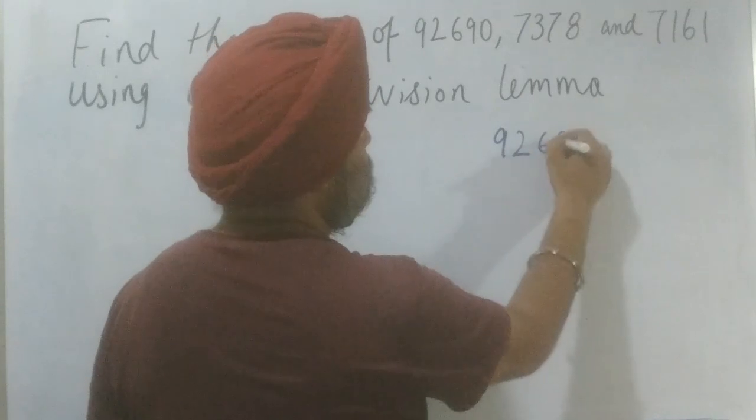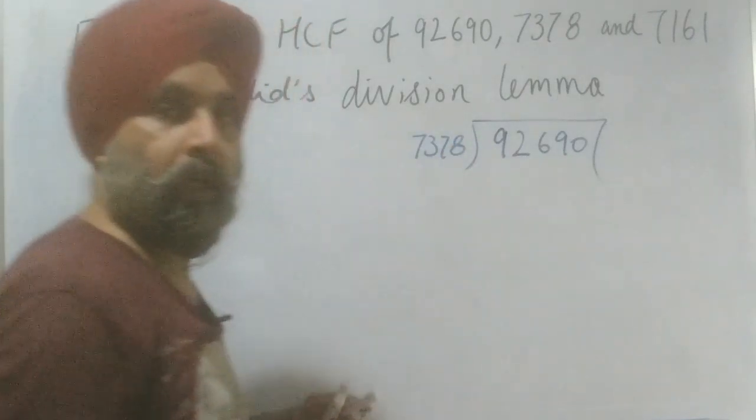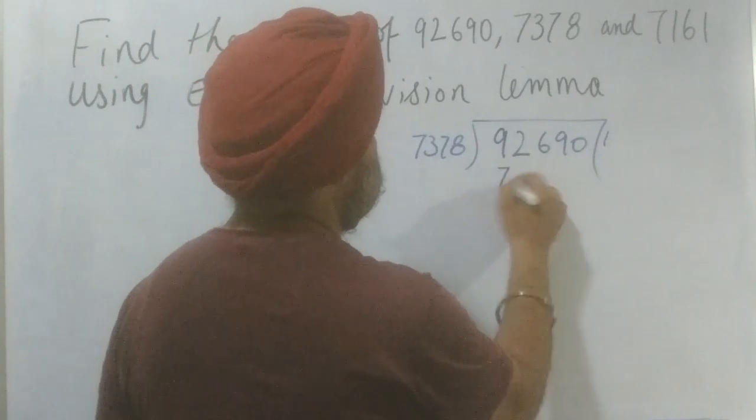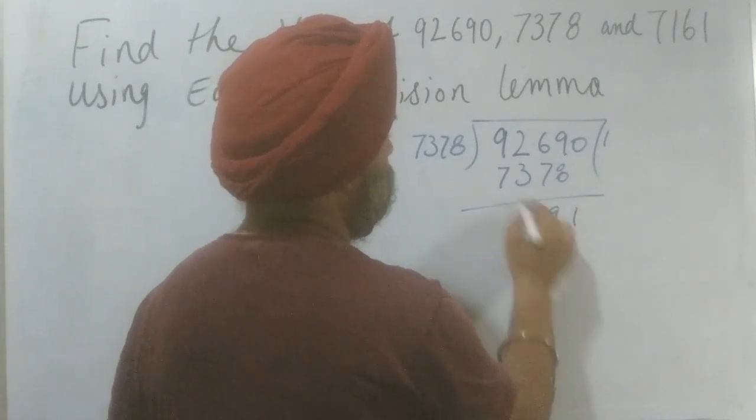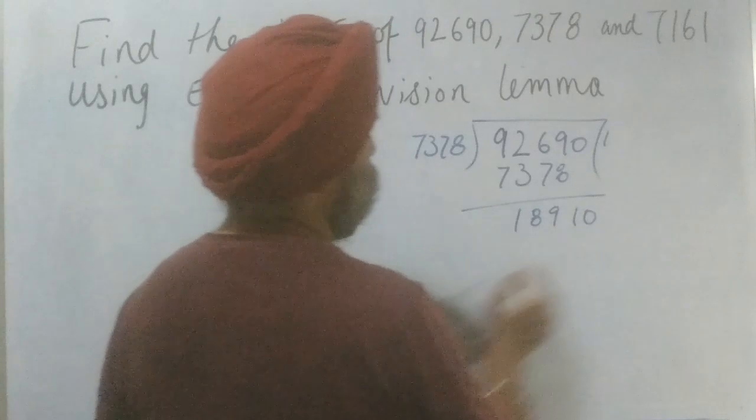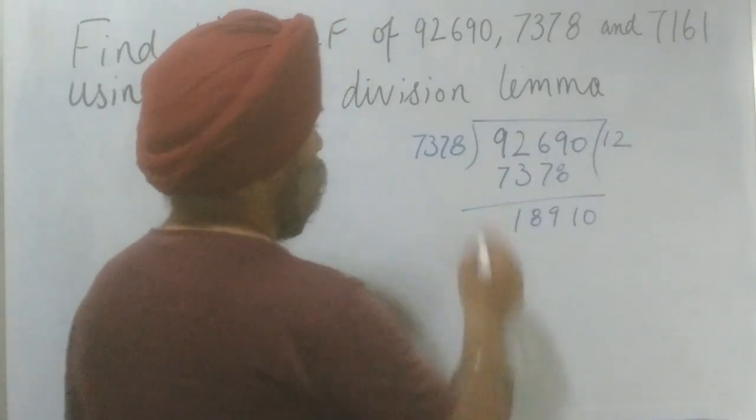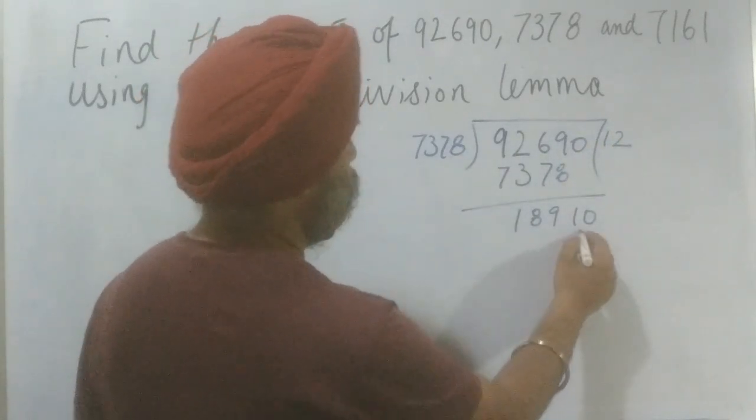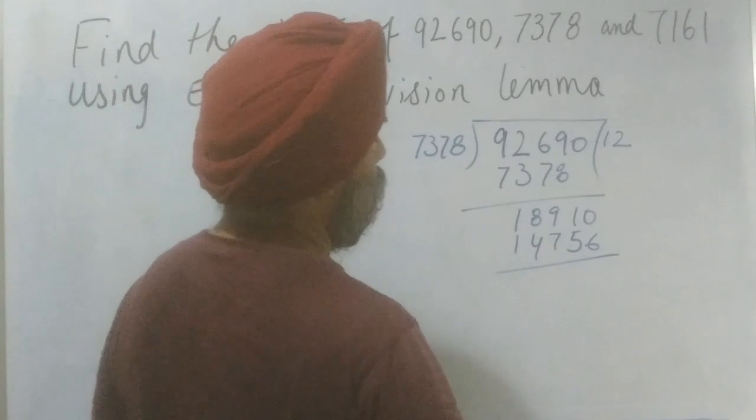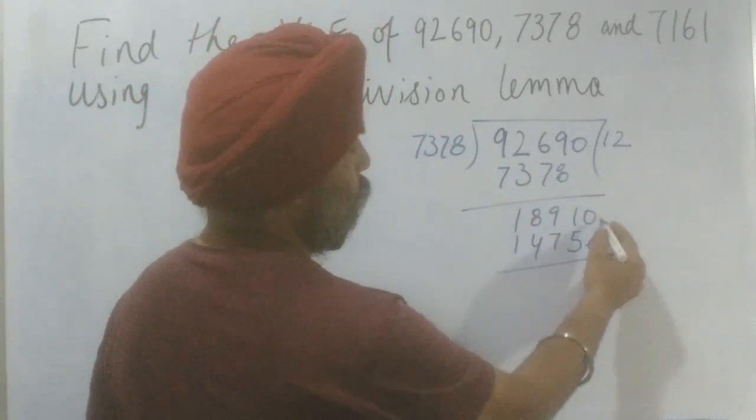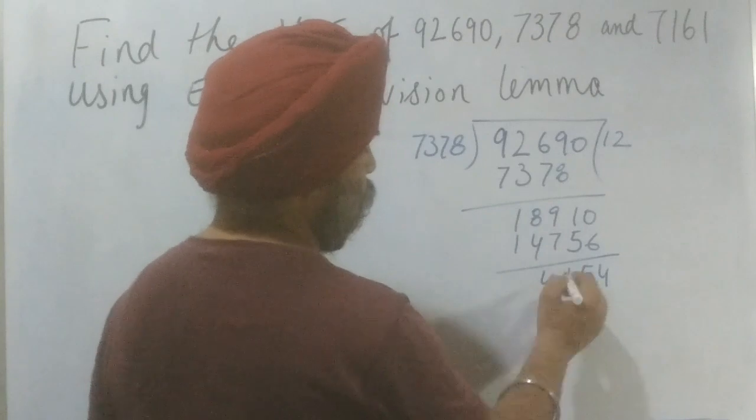So here we write 92690 and we will divide it with 7378. So let's start. 7378. Now we subtract 1, and this is 9, and this is 8, and this is 1. Now we will take 0 and then we will divide it. If we are not going to divide it, so here is 16 and 114, 151, 36, and 7, and this is 14.